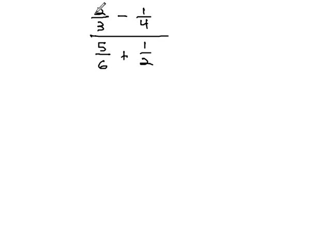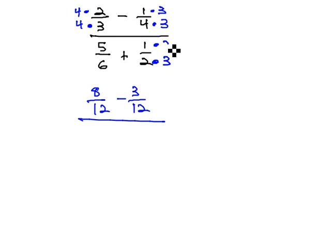The common denominator here appears to be 12 between 3 and 4, so we'll multiply 3 by 4 top and bottom, and the 4 by 3 top and bottom. This gives us 8 twelfths minus 3 twelfths. In the denominator, the common denominator between 6 and 2 is 6, so we simply multiply the second fraction by 3. This gives us 5 sixths plus 3 sixths.